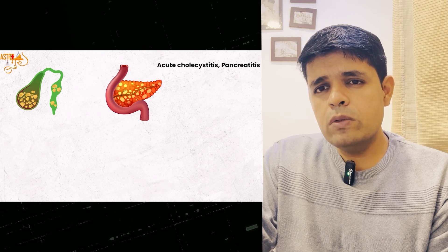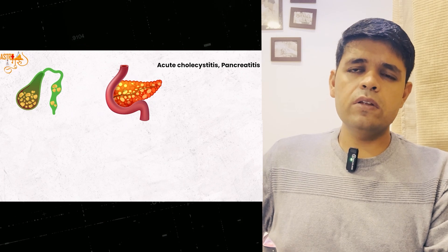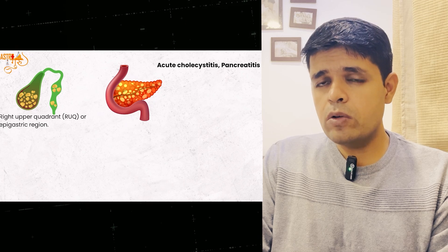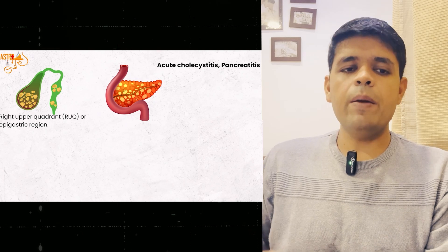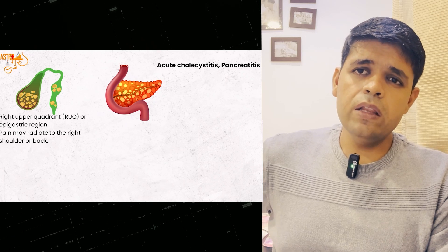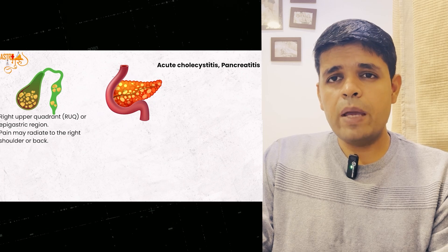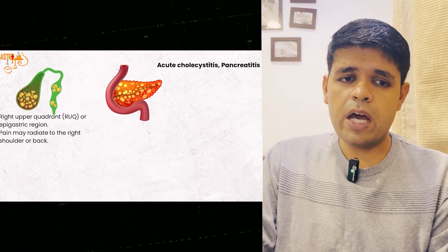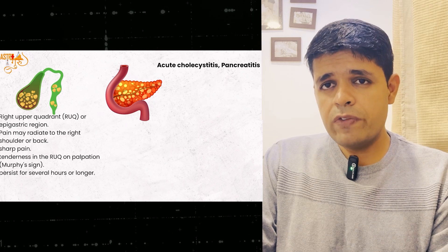Now, acute cholecystitis versus acute pancreatitis — how to differentiate. The liver is on the right side with the gallbladder below. Inflammation of the gallbladder is acute cholecystitis. The pain is usually in the right upper quadrant, sometimes epigastric. Radiation is on the right side or to the scapula — not to the lumbar spine. It is a sharp, stabbing type of pain. Tenderness in the right upper quadrant is known as Murphy's sign.